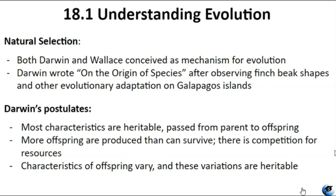According to Darwin, natural selection arises from three principles in nature. First, characteristics are inherited from parents to offspring. Second, more offspring are produced than can survive due to limited resources, leading to competition for survival and reproduction. Finally, offspring exhibit variations in their characteristics, and those with inherited traits that enhance their competitive abilities have a higher likelihood of surviving and reproducing. These advantages become more common in subsequent generations, resulting in population changes over time, a process known as descent with modification.